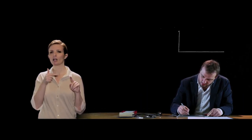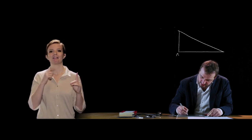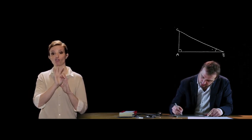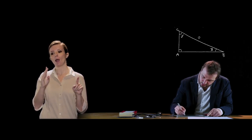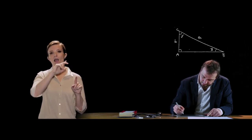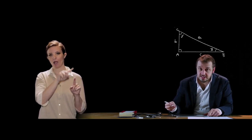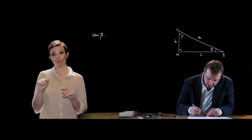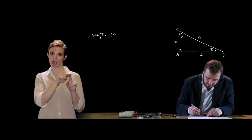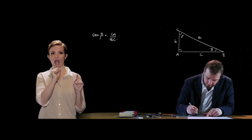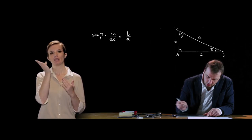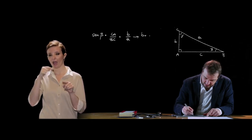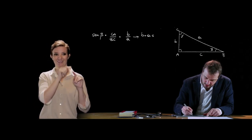Consider the right triangle A, B, C, with angles β and γ, hypotenuse A, and legs B and C. Per definizione, considering angle β, we have that sin(β) = CA/BC, which equals B/A. This leads us to write that B (leg) equals A (hypotenuse) times sin(β).